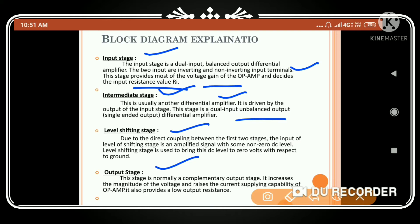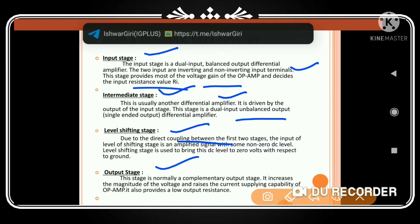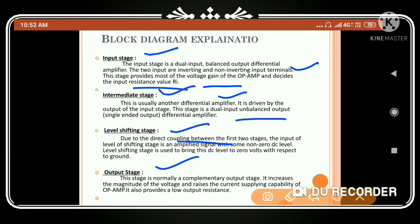The level shifting stage: due to direct coupling between the first two stages, the input of the level shifting stage is an amplified signal with some non-zero DC level. The level shifting stage is used to bring this DC level to zero volts with respect to ground.